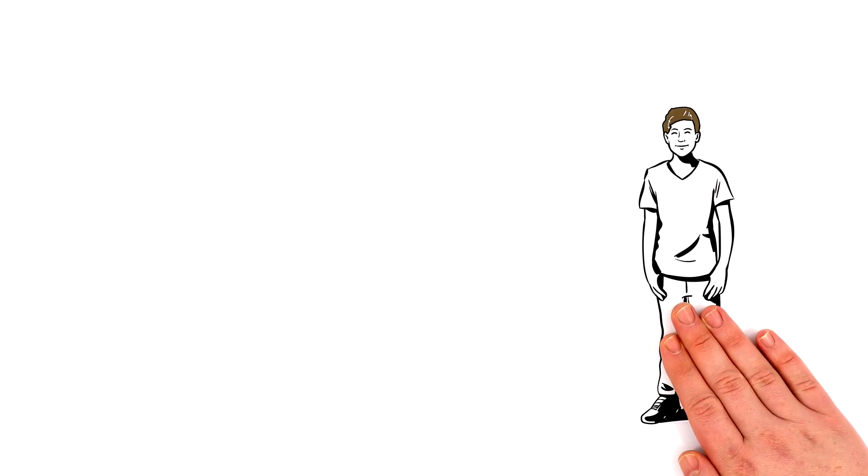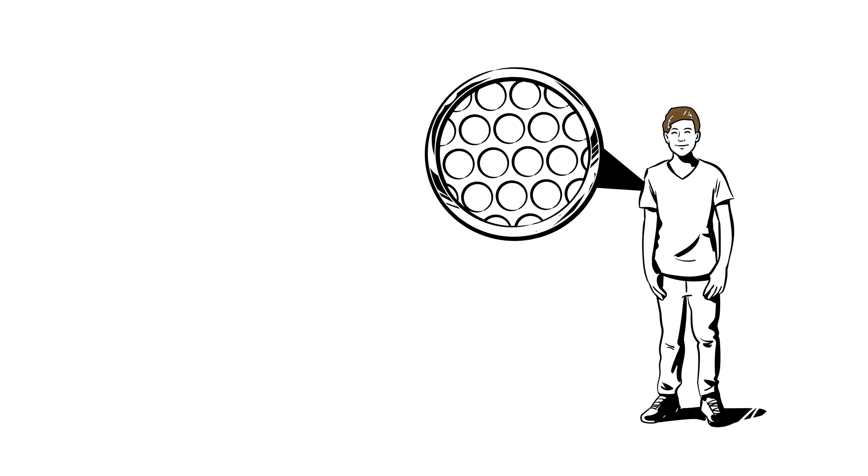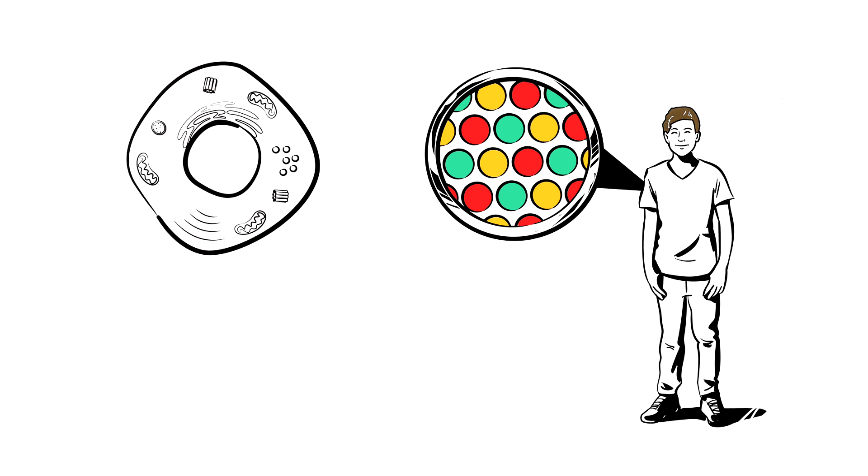The human body consists of trillions of tiny cells. These cells can be very different from one to another, but there is one thing they all share. Their core contains our genome.